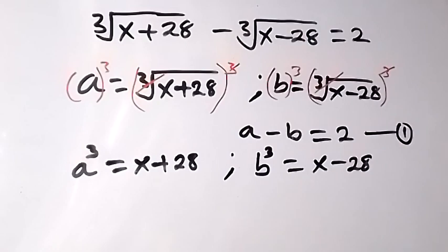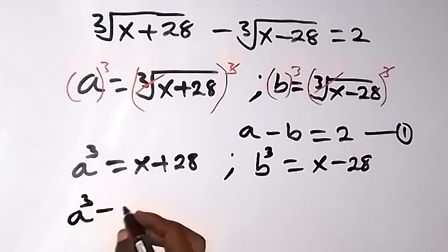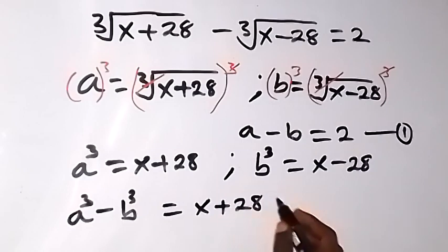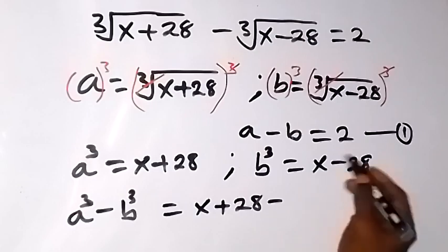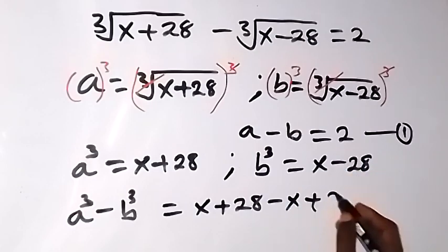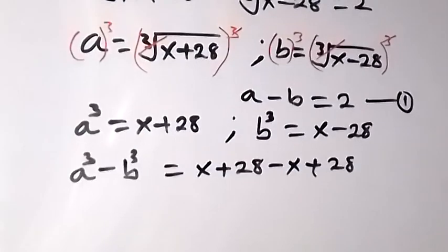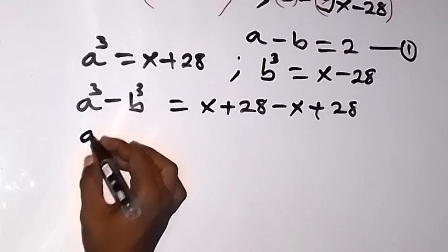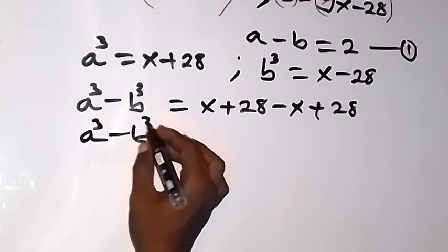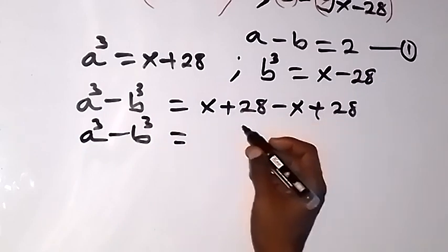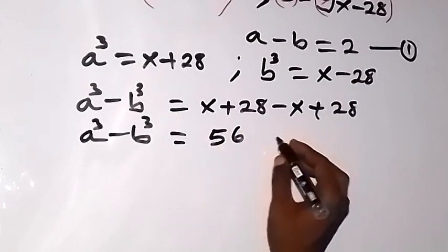Then let us form an equation here by subtracting these two expressions. So we have a cubed minus b cubed. That's we have subtracted the left-hand side. Then we subtract the right-hand side: x plus 28 minus x minus 28. That minus will affect this minus, giving minus x plus 28. This gives us a cubed minus b cubed equals x cancels, and 28 plus 28 is 56. Let's call this equation 2.